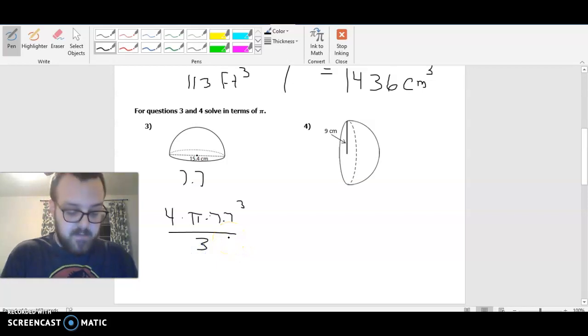So for me, it's going to be 4 times 7.7 to the third divided by 3. And I'm going to get 608.7π. Now I'm not going to leave it as that answer because this would be the volume for an entire sphere. But as we see, we only have half of the sphere here.